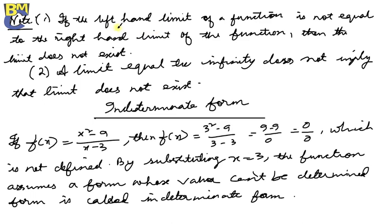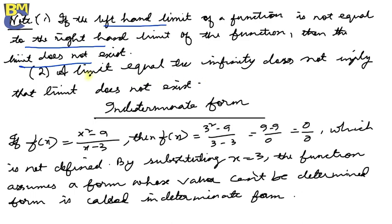Note: if the left-hand limit of a function is not equal to the right-hand limit, then we say the limit does not exist. For the existence of a limit, the left-hand and right-hand limits must be equal. A limit equal to infinity does not imply that the limit does not exist.